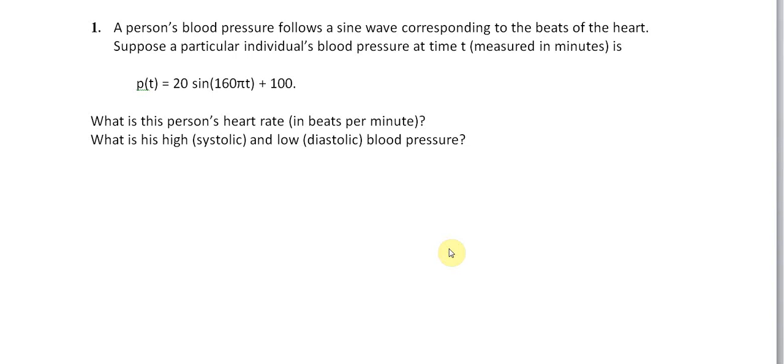We're going to start with a problem on blood pressure. A person's blood pressure follows a sine wave corresponding to the beats of the heart. Suppose an individual's blood pressure at time t measured in minutes is p(t) equals 20 times sine 160πt plus 100. What is the person's heart rate and what is his high and low blood pressure?